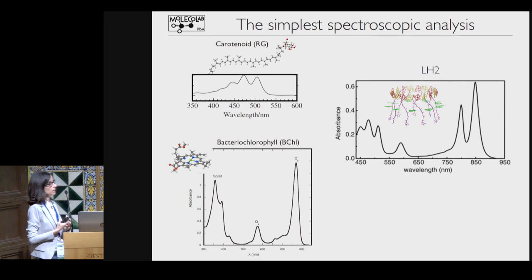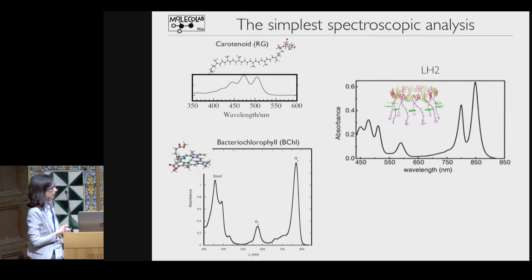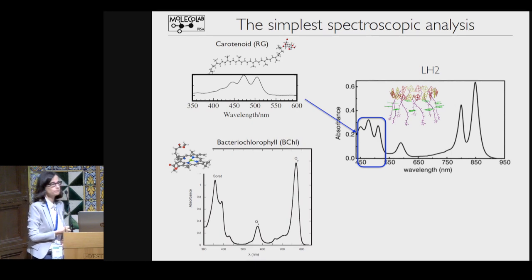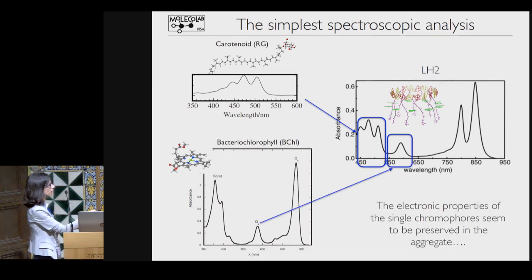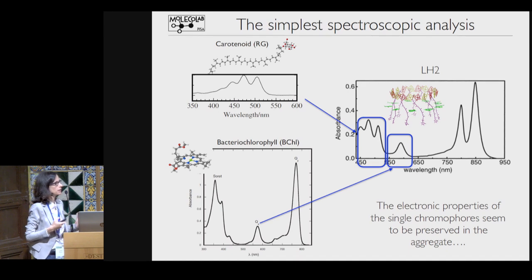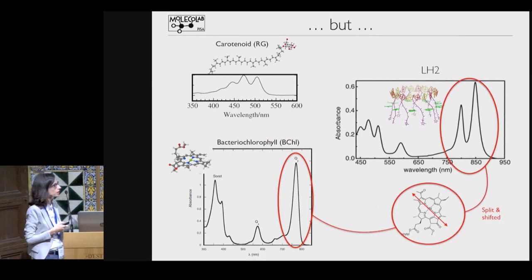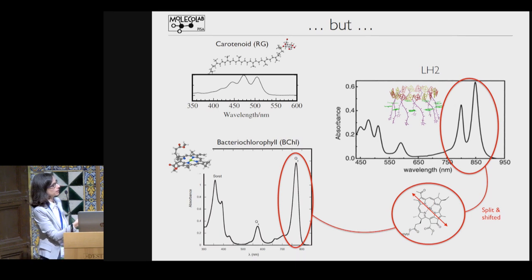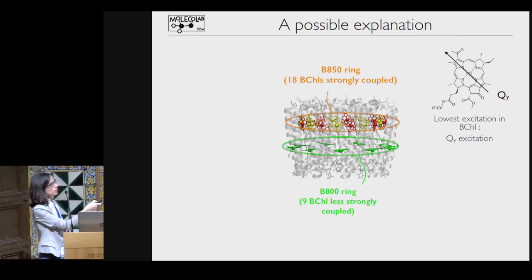To understand this, I can look at the spectroscopy and compare the LH2 absorption with respect to the absorption of the single components, the carotenoid and the bacteriochlorophyll. If I look at the region of the carotenoid, the structure of the spectrum is more or less the same as the isolated system, as well as for the QX excitation of bacteriochlorophyll. Apparently, the complex is the sum of the single chromophore. But if you look at the region of the QY excitation of bacteriochlorophyll—the lowest excitation—it's clear that something is happening, because the band is shifted and split.